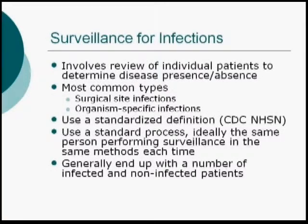I'm going to take a few minutes to talk about surveillance. Specifically, if you're doing surveillance for infections, this involves reviewing specific patients and determining yes they have an infection or no they do not. Your most common types are going to be surgical site infections, and then organism-specific infections, so rates of MRSA, rates of VRE.